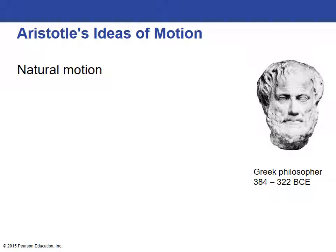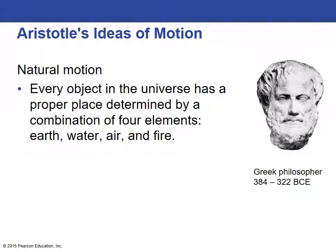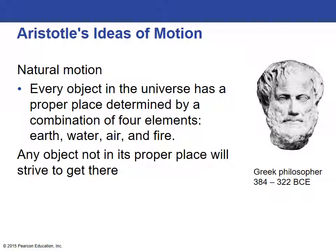He called these natural motion and violent motion. Natural motion was the idea that an object in our world has a place that it wants to be — a position that it wants to be in — and an object not in its proper place will have motion to get there. Think about smoke blowing or a ball rolling down a hill.